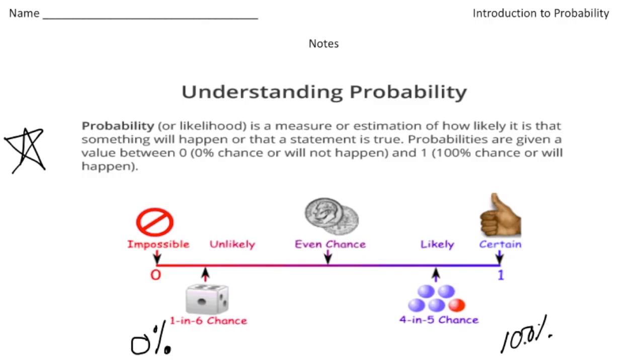Now most events in life range between the 0% to 100%. So for example, right in the middle, notice we have an even chance. Well, an even chance basically means a 50% chance. So for example, if you flip a coin, the probability of getting a heads or a tails is 50-50, right?